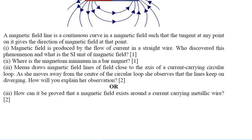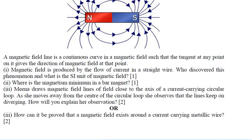A magnetic field line is a continuous curve in a magnetic field such that the tangent at any point on it gives the direction of the magnetic field at that point.